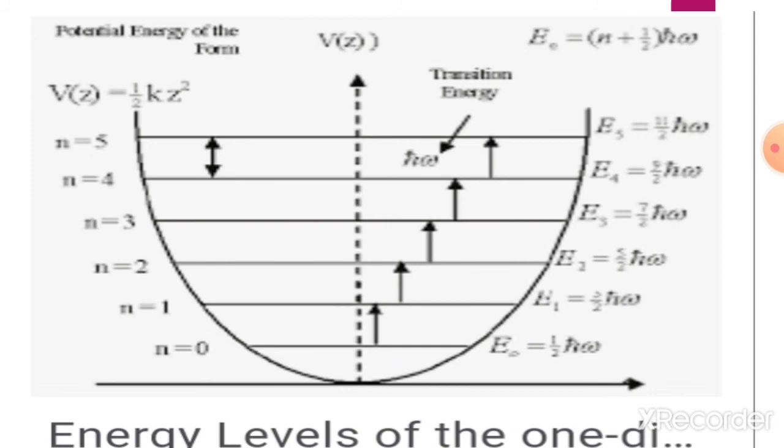We see that n equal to 0 has energy half h nu, n equal to 1 has energy 3 by 2 h nu, n equal to 2 has energy 5 by 2 h nu, n equal to 3 has energy 7 by 2 h nu, n equal to 4 has energy 9 by 2 h nu, and the gap between two energy levels is equal to h nu. The 0th level energy is half h nu.